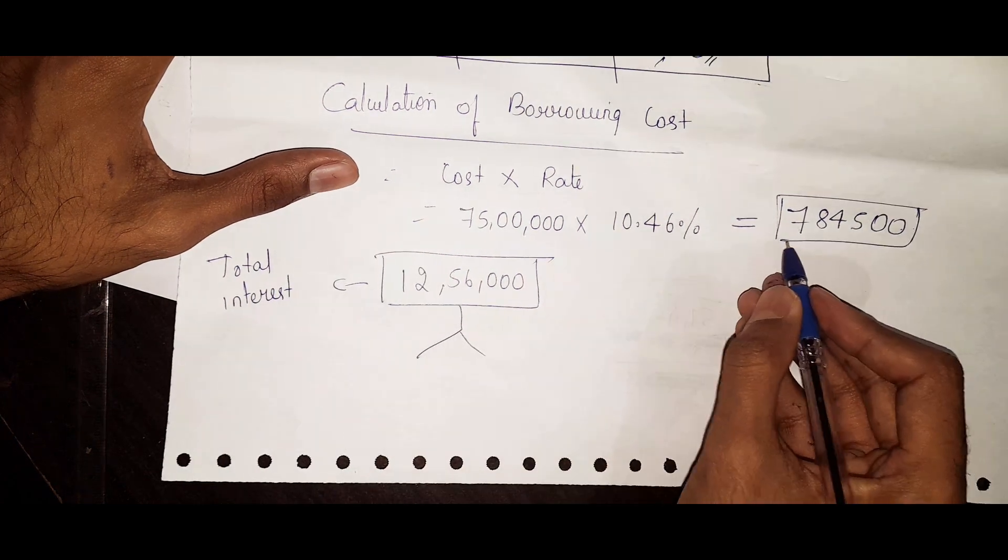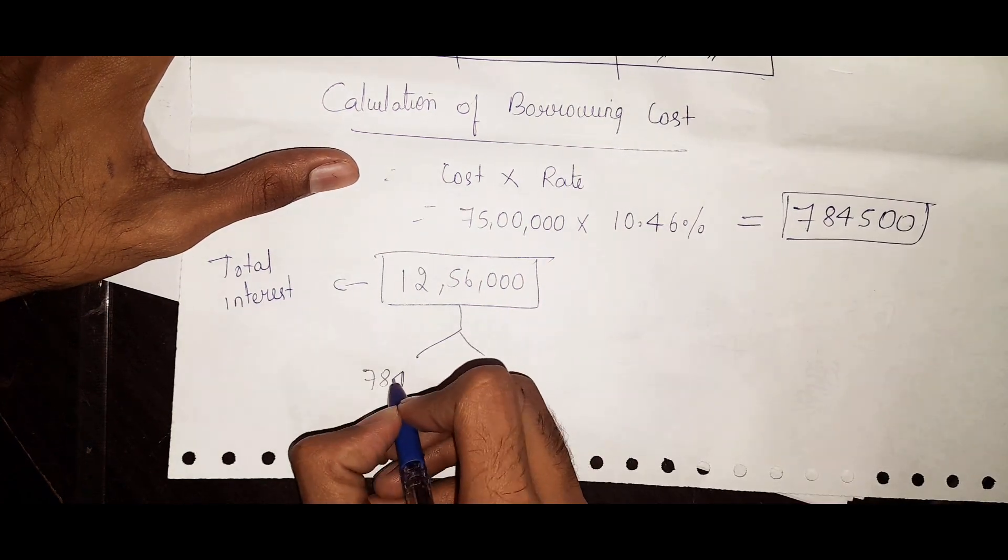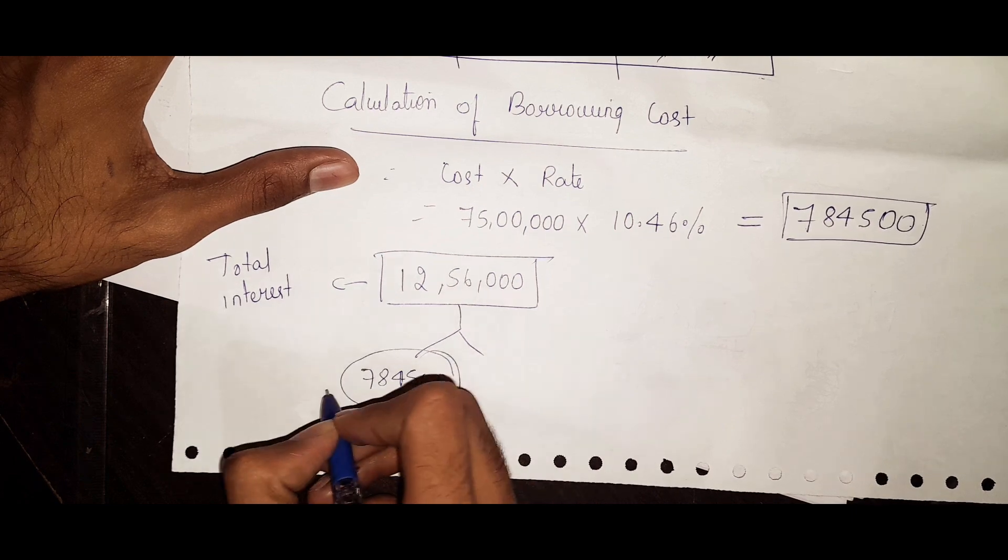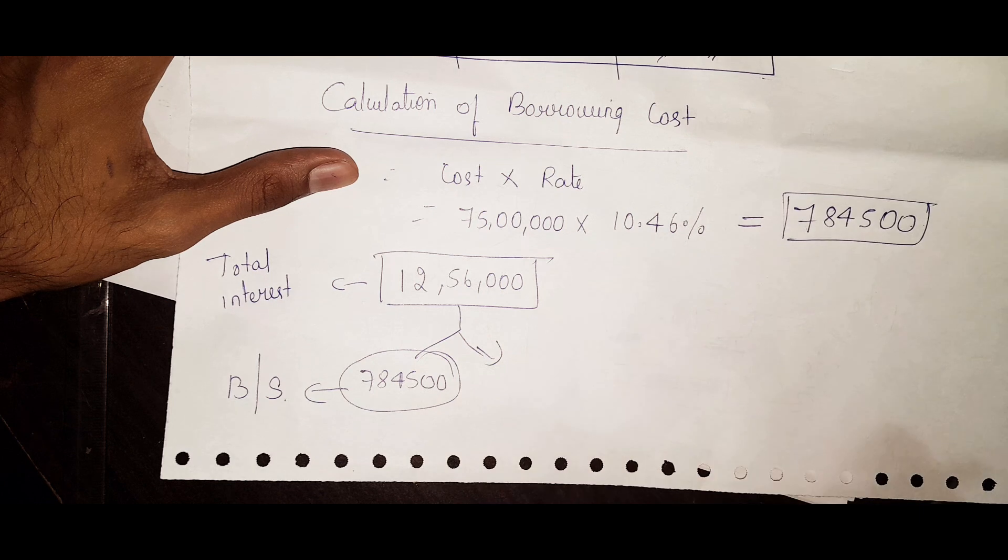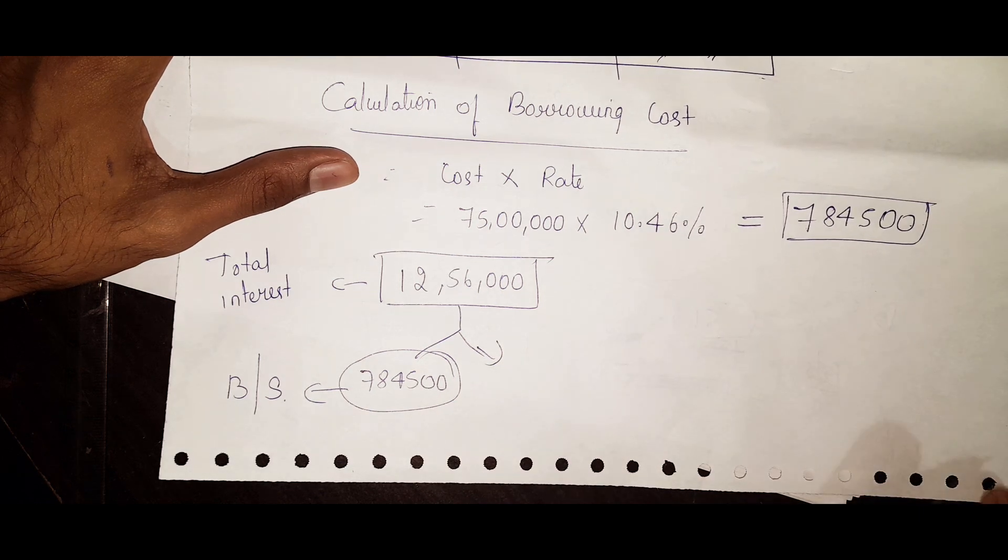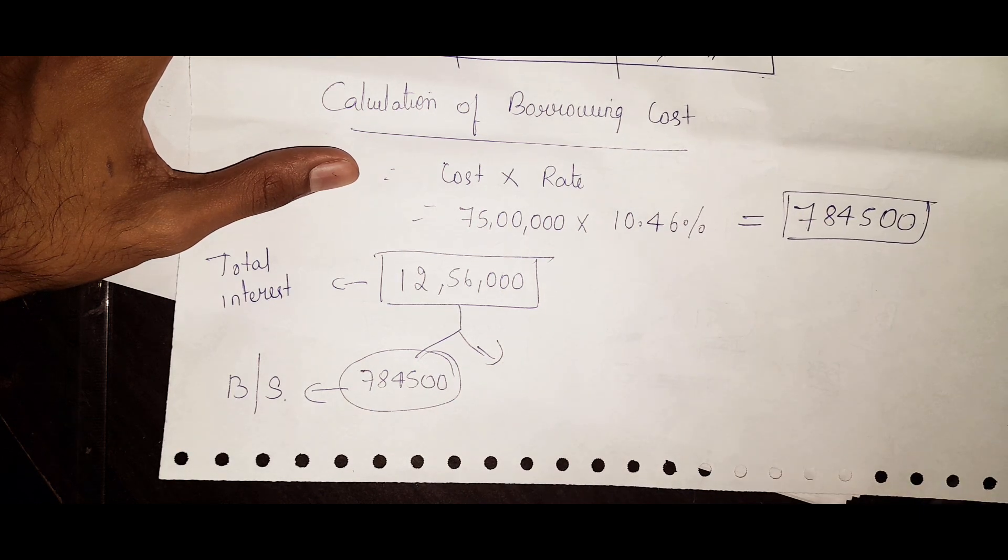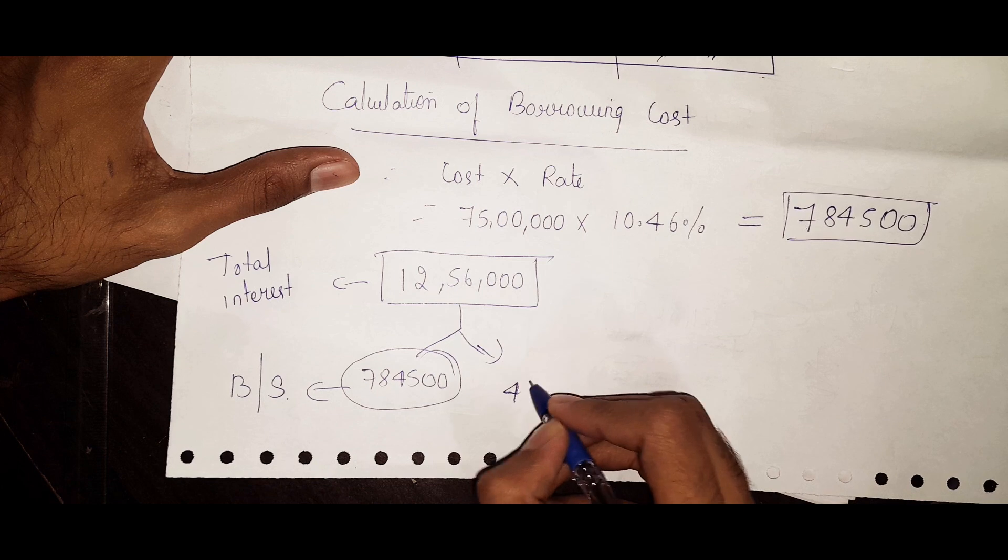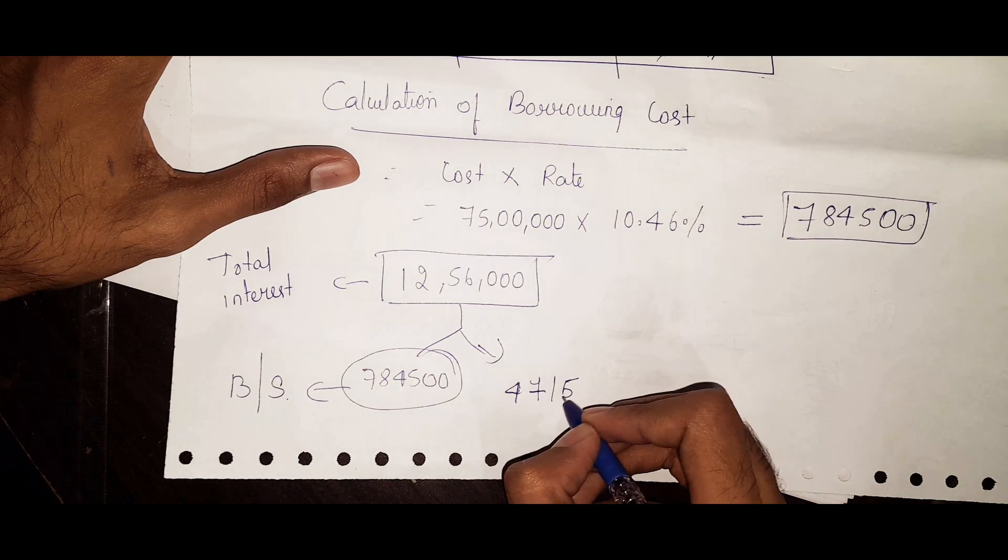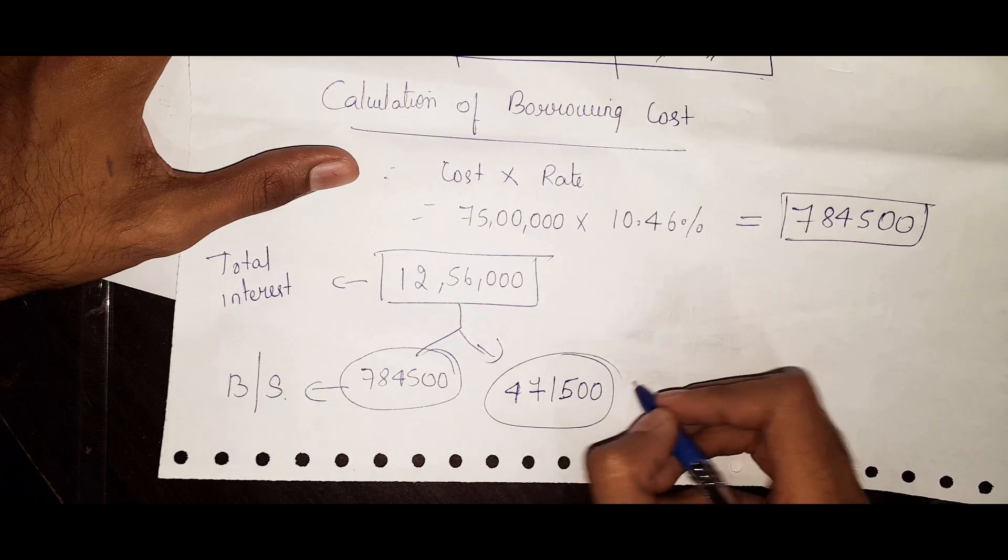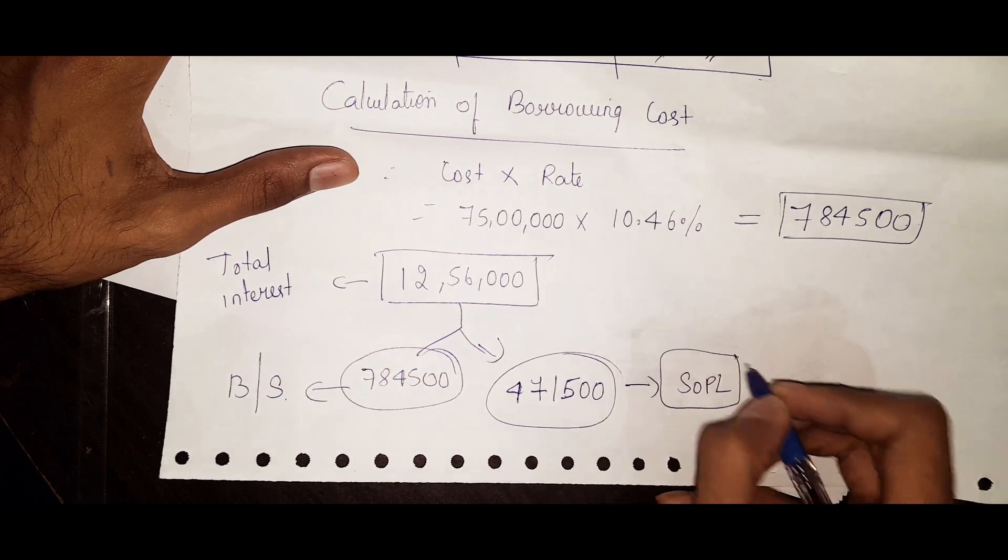In that, 7 lakh we have capitalized. Whatever amount capitalized, that will be shown in the balance sheet. Remaining amount, if you subtract it from 12 lakh 56 thousand minus 7 lakh 84 thousand 500, we get 4 lakh 71 thousand 500.